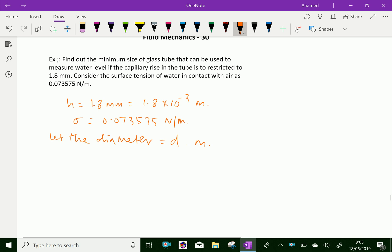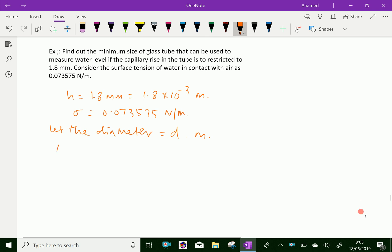Then, angle theta. Angle theta for water must be 0 degrees because minimum rise is restricted. Now we have the relation: capillary rise h equals 4 sigma over rho g d.